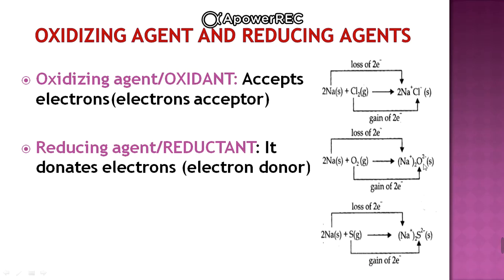In the third example, sodium is again losing electrons to sulfur, and sulfur is gaining electrons. So the electron acceptor is sulfur; sodium is the electron donor. In all three cases, sodium is acting as the reducing agent.